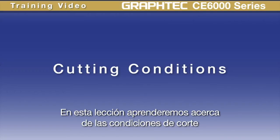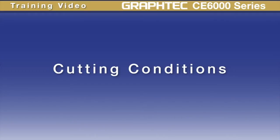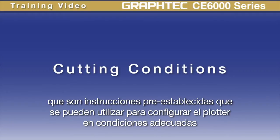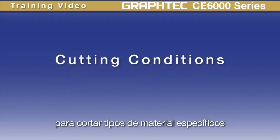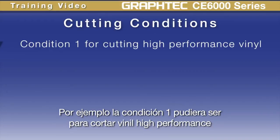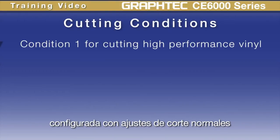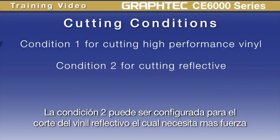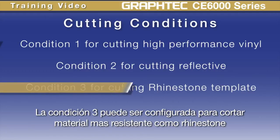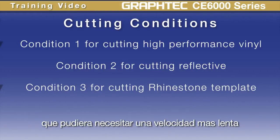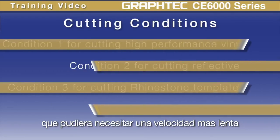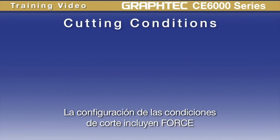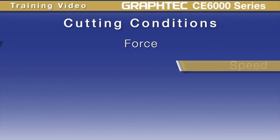In this lesson we'll learn about cutting conditions. Cutting conditions are like cutting presets that can be used to set the plotter to the perfect condition for cutting specific types of material. For instance, condition 1 may be set up for cutting high-performance vinyl with normal cut settings, condition 2 may be set up for cutting reflective vinyl which may need a higher force, condition 3 may be set up to cut rhinestone pattern material that may need a slower speed, and so forth.